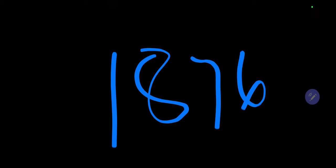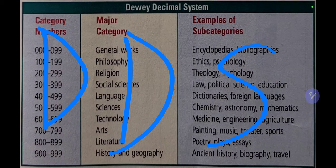In the year 1876, a librarian named Melville Dewey divided the world of knowledge into 10 broad categories, which we still use today. Under the Dewey Decimal System, or DDS, books are organized according to the following numerical structure.